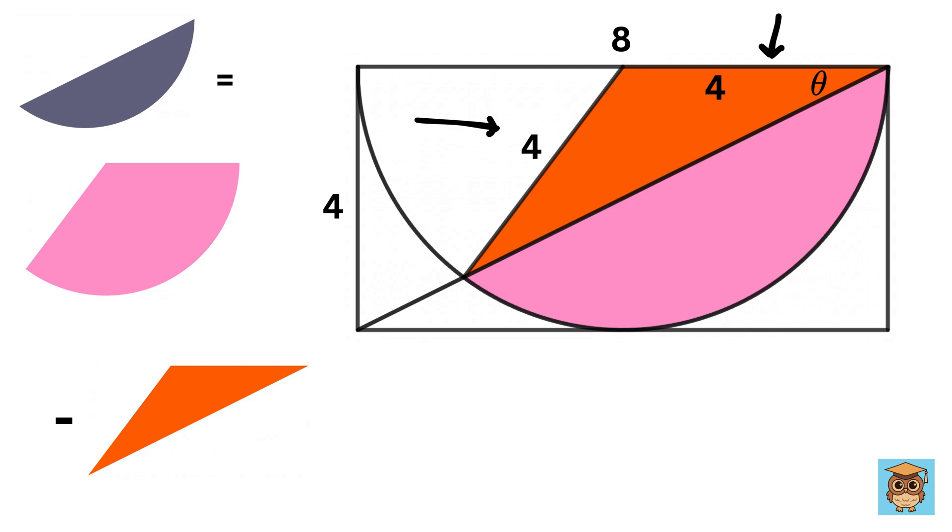Now, since both of these are of length 4, or the radius of this semicircle, therefore, this will be an isosceles triangle. Hence, this angle will also be theta. Therefore, this central angle will be 180 degrees, or π minus 2θ.